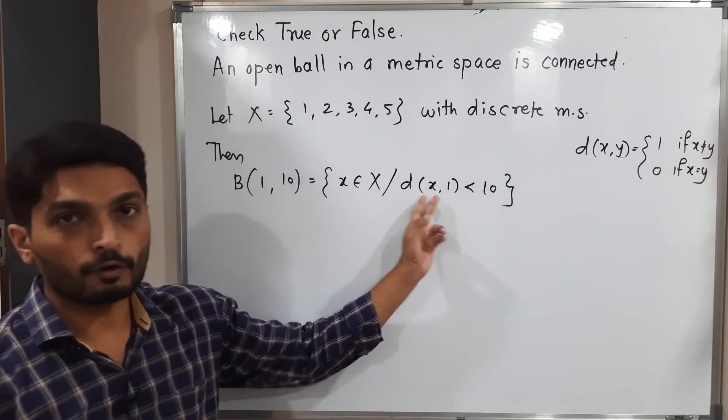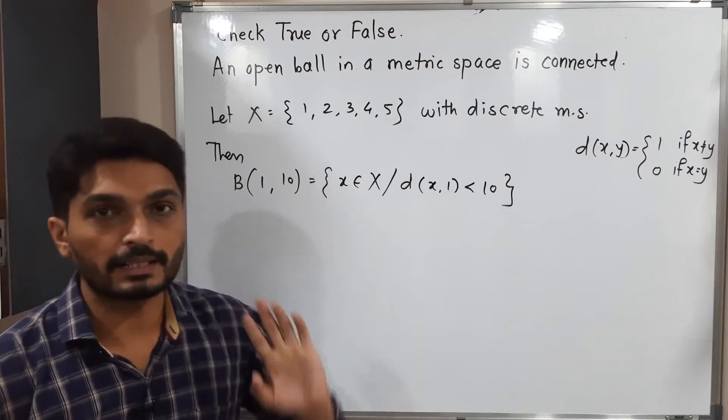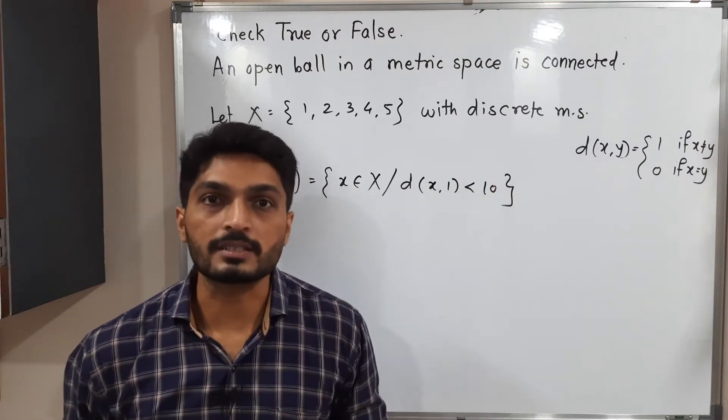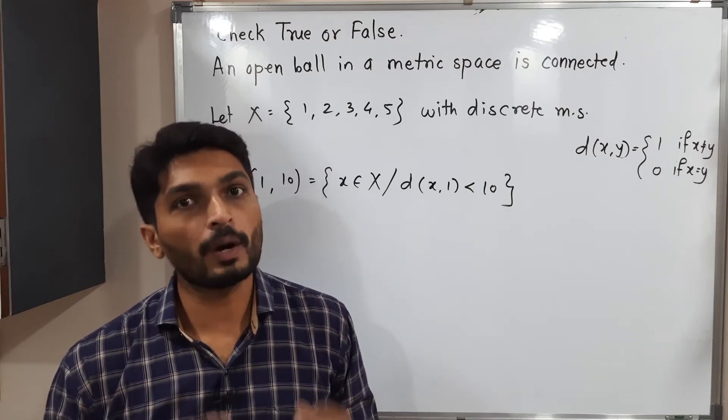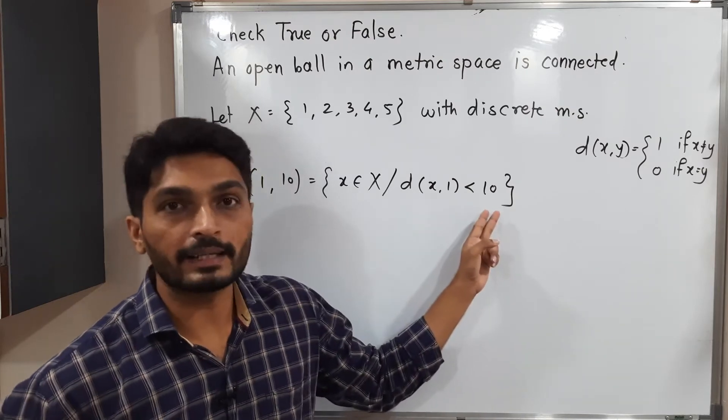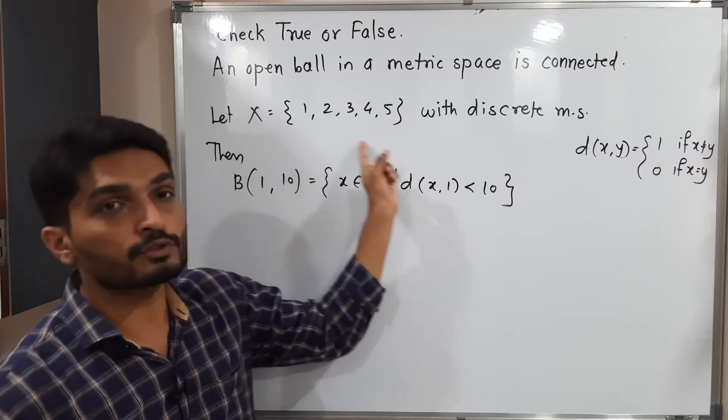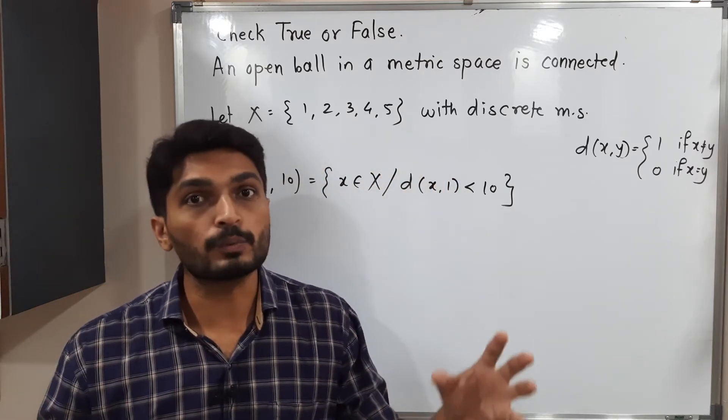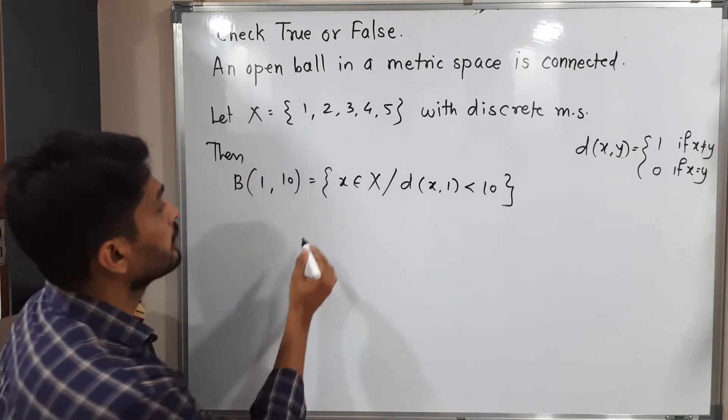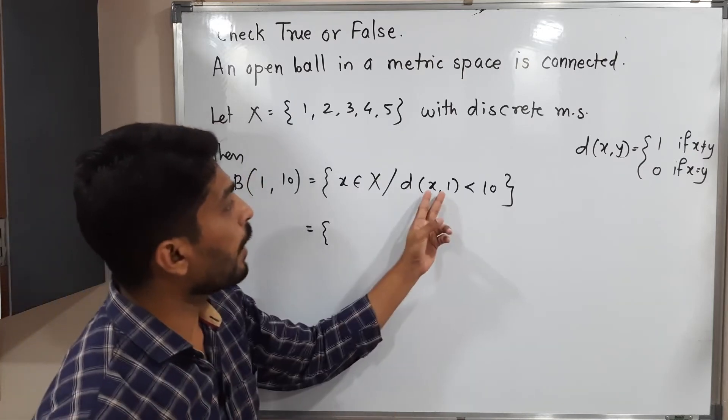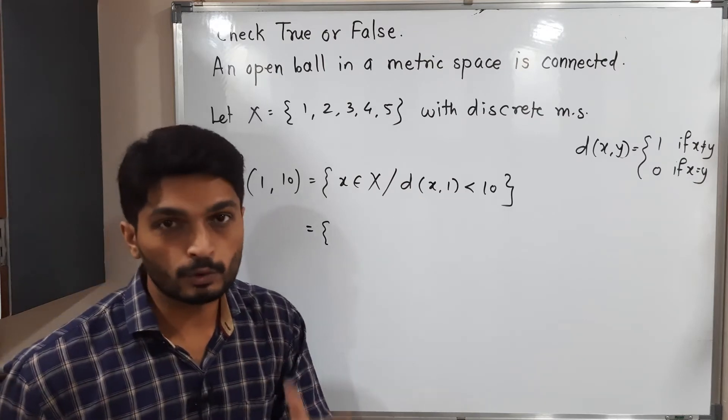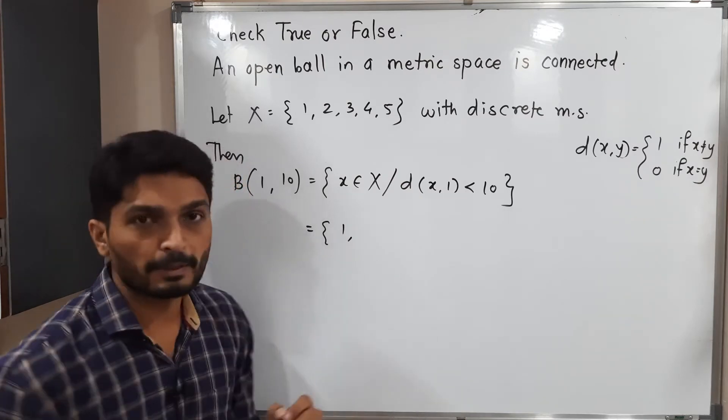Distance of any point from the center of ball should be less than its radius. But as you know in a discrete metric there are only two distances either 0 or 1 and both of them are less than 10. So that's why all elements of set x will satisfy this condition. That means all elements will come in this set. You can see here, distance of 1 from itself is 0. So it is less than 10. So 1 is an element of this set.